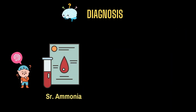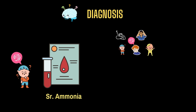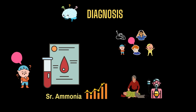A serum ammonia test may be ordered when you experience signs and symptoms of an elevated ammonia level, such as mental changes, disorientation, sleepiness, and an altered sensorium. Hence it is an important marker to rule out hepatic encephalopathy in the prognosis of a patient, as high ammonia may lead to seizure, coma, and even death.